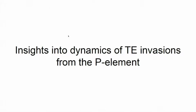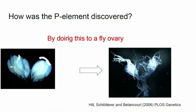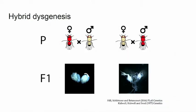Today I'm providing some insights into the dynamics of a transposable element invasion based on the P element. How was it recognized? It was recognized by examining ovaries. This is how a healthy ovary of a fly looks — very round and fertile. And this is how it looks when the P element is done with it: it's totally dysgenic, it does not produce any eggs anymore. It's useless.